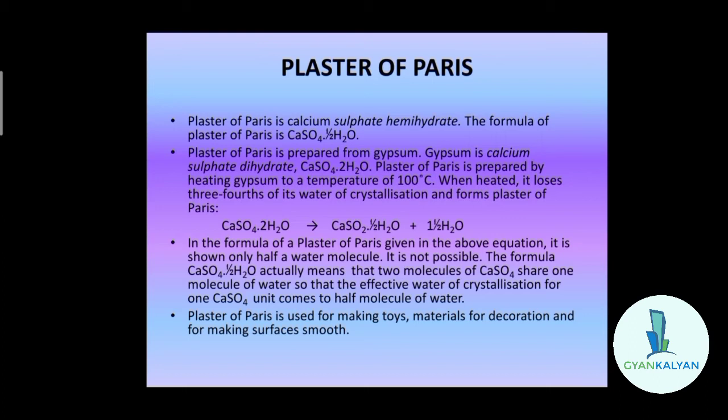Plaster of paris is prepared from gypsum. Gypsum is calcium sulfate dihydrate — CaSO4·2H2O — which contains two molecules of water. Plaster of paris is prepared by heating gypsum to 100°C; it loses three-fourths of its water of crystallization and forms plaster of paris. The chemical equation is: CaSO4·2H2O → CaSO4·½H2O + 1½H2O. The formula CaSO4·½H2O means two molecules of CaSO4 share one molecule of water, so each CaSO4 unit effectively has half a molecule of water.